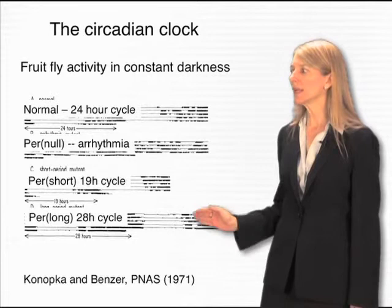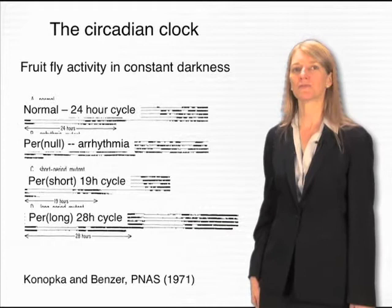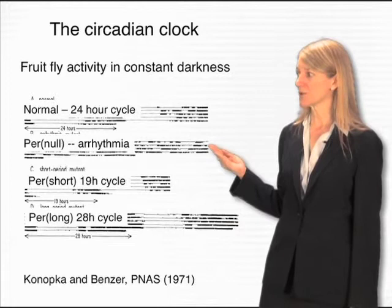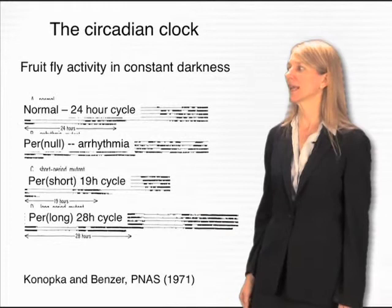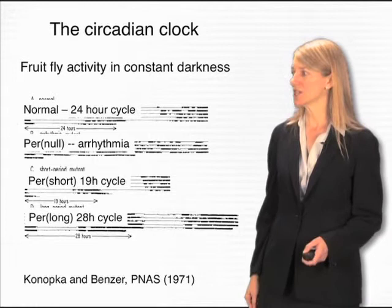Remarkably, all three of these mutations affected a single gene. Because of different kinds of changes in its activity, this one gene could either completely disrupt the rhythm, make it shorter, or make it longer. That pointed to the fact that this gene must have a key role in determining the running of the circadian clock, and this gene is called PER, for period.